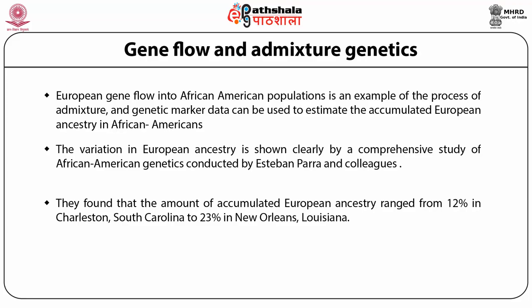Parra et al. also examined admixture estimates based on mitochondrial and Y-chromosomal DNA markers, which allow us to look at the different evolutionary histories of male and female lineages. The mitochondrial DNA analysis showed European ancestry ranging from 0% to 15%, whereas estimates from Y-chromosome DNA markers ranged from 9% to 47%, revealing more European ancestry in the male lineage than the female lineage. These results suggest that over the past few centuries there have been more European genes coming from the mating of European-American males with African-American females. In pro-slavery times, the majority of interracial matings were probably between males of European descent and enslaved females of African descent, a pattern reflected in the mitochondrial and Y-chromosomal DNA analysis. In the last 40 years, there have been more marriages between black husbands and white wives, resulting in an increase in the maternal component of European ancestry in African Americans.